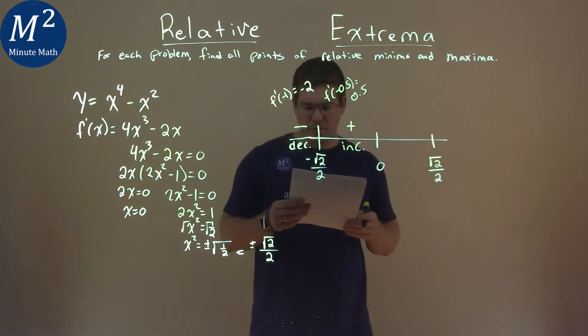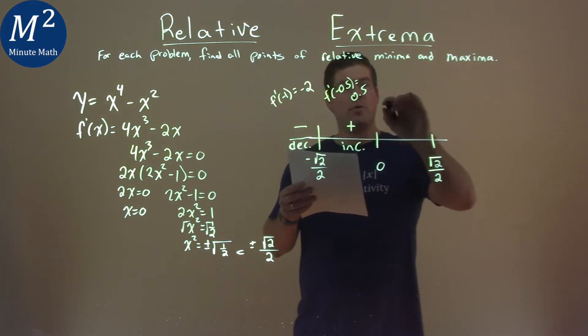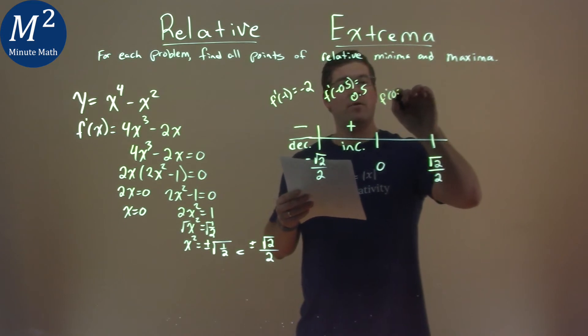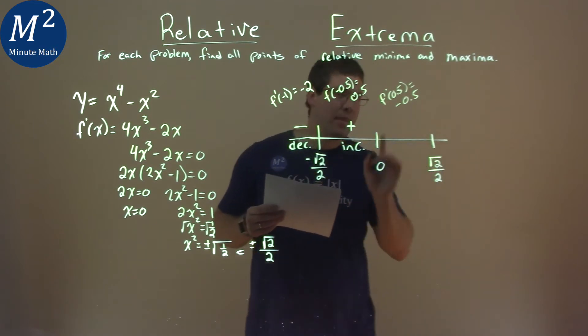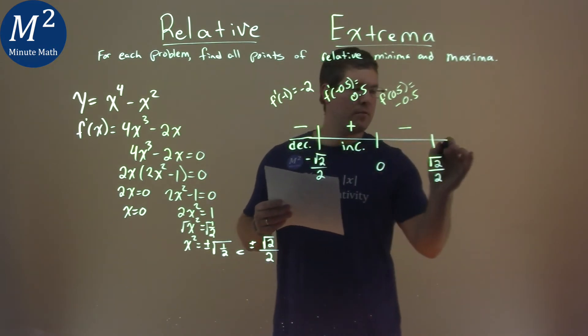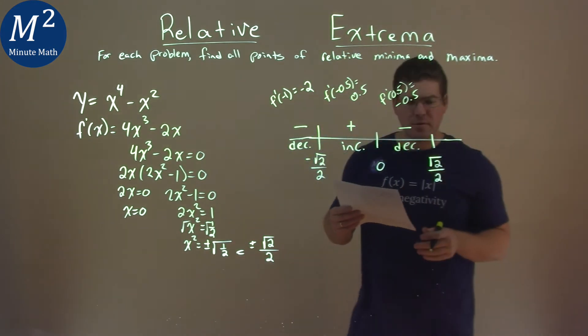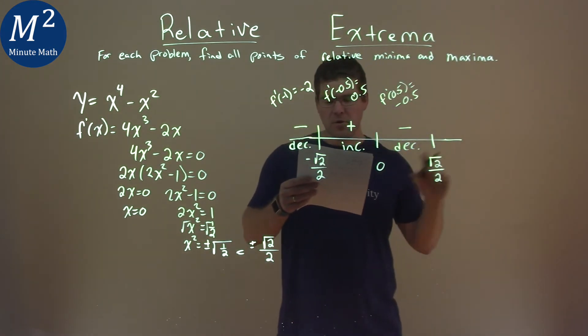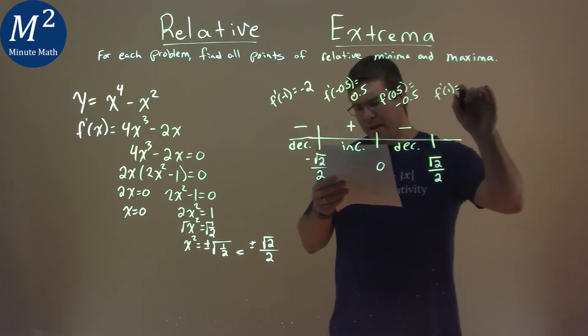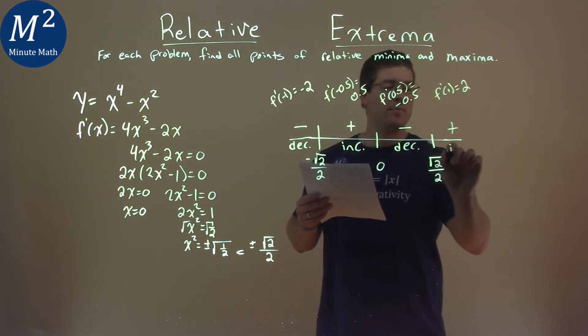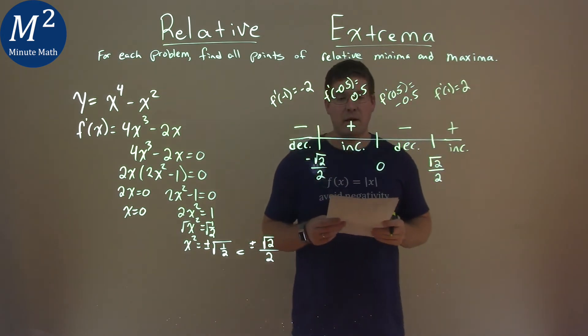Now, between 0 and square root 2 over 2, I picked a positive 1 half. So I have f prime of 0.5, and that came out to be negative 0.5. That's a negative value, that's what I'm really looking for here, and we're decreasing. Now, from square root 2 over 2 to positive infinity, I just picked 1. So f prime of 1 here, and that came out to be positive 2. It's positive, so we're increasing on that interval.